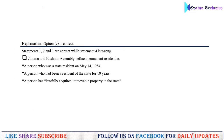Here is the complete explanation: there are three main criteria for permanent residency in J&K. Statements one, two, and three are correct, while statement four is wrong. Let's move to the next question.